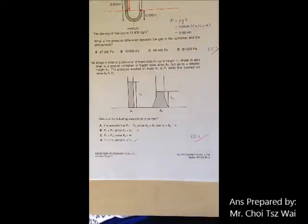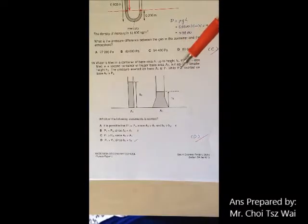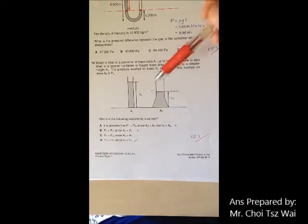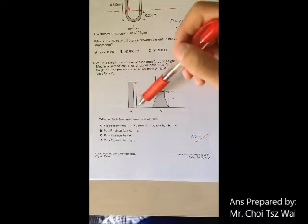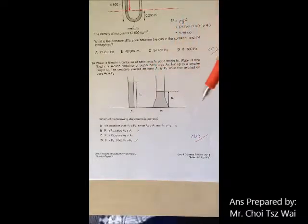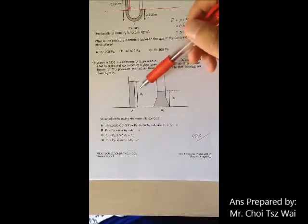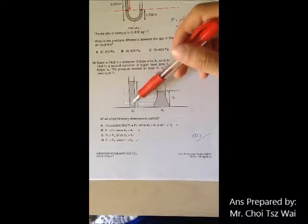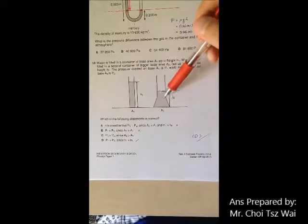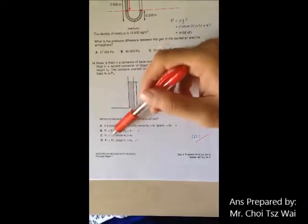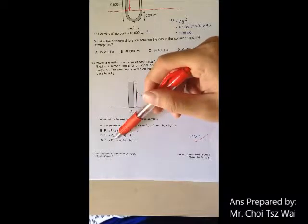Okay, question 14. The concept tested is that for liquid pressure, it is independent of the base area. The liquid pressure is only dependent on the height of the liquid column. So if you look at this, you can see that the pressure at the left side must be greater than the pressure on the right side because the height here is larger. So that's why you can identify this P1 larger than P2 is definitely correct.